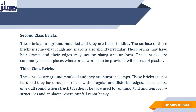Next is second class brick. These bricks are ground molded and also burnt in the kilns. The surface of these bricks is somewhat rough and the shape is also slightly irregular. These bricks may have hair cracks and their edges may not be as sharp as the first class brick. These bricks are commonly used at places where brick work is to be provided with a coat of plaster.